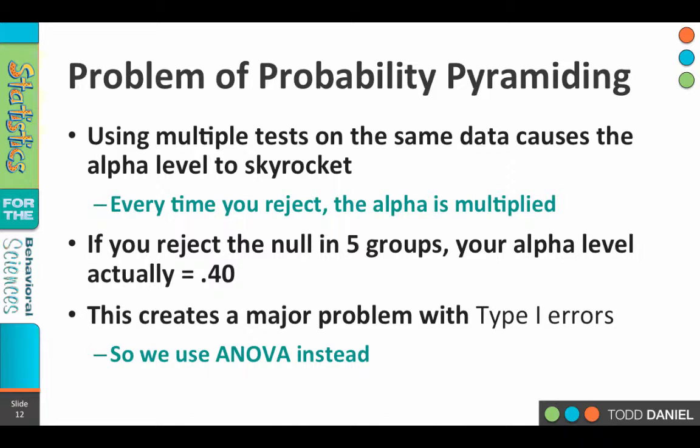In fact, if you were comparing five groups, each of which was different from the other — so we rejected the null five times — your functional alpha level would rise to about 0.40. In other words, real close to that 50-50 flip of a coin. Something has to be wrong; there has to be a type 1 error in there somewhere, and you won't know where it is. So the reason we can't use multiple t-tests is because doing so is going to lead us to type 1 errors.